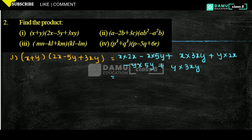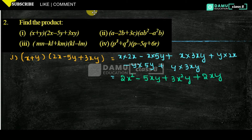So let's take: x into 2 into 1 gives 2x squared, minus 5xy, plus 3x²y, plus 2xy, minus 5y squared, then plus 3xy squared.